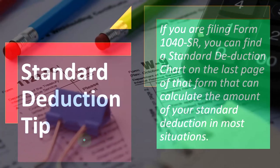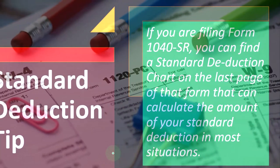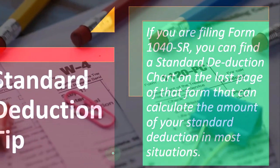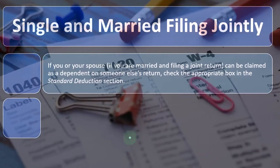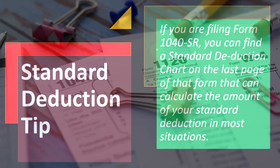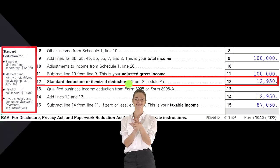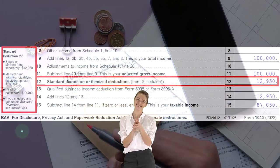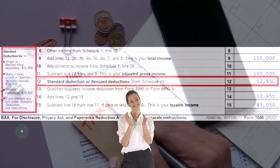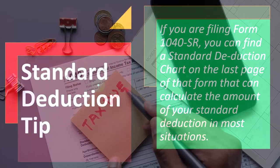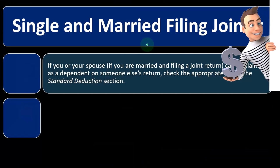Standard deduction tip: if you are filing Form 1040SR, you can find a standard deduction chart at the last page of that form that can calculate the amount of your standard deduction in most situations. Tax software is often a useful component as well. Notice there are a couple of variations to the standard deduction in that box on the first page of the Form 1040 — if you're over a certain age, there could be an adjustment, and if you're blind, there could be some other adjustments, which are often related to the Form 1040SR. We'll dive into that when we get into the example problems.